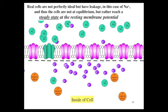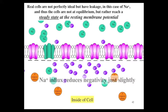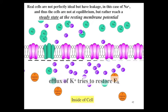But remember, real cells are not perfectly ideal, but have leakage. In this case, the leakage of sodium. Thus, the cells are not at equilibrium, but rather reach a steady state at the resting membrane potential, whereby you get an influx of sodium in, which reduces the negativity on the inside of the cell just slightly, allowing potassium to leave.